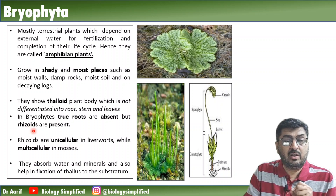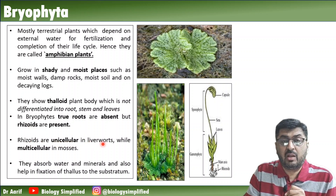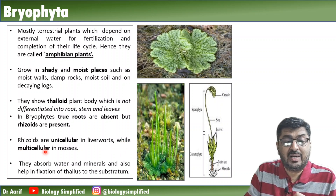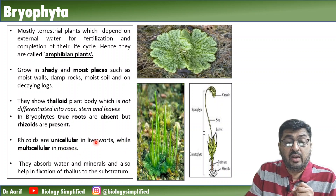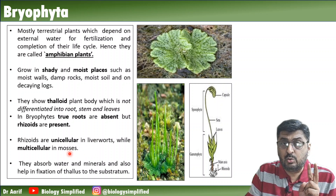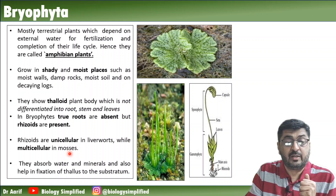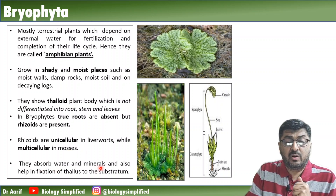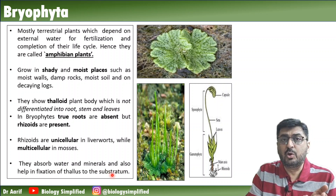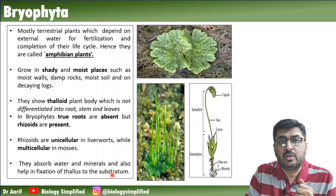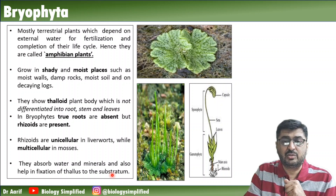Rhizoids are present. Rhizoids are unicellular in liverworts while multicellular and branched in mosses. Liverworts and mosses are two groups that we are going to study as classification of Bryophyta. The role of rhizoids is to absorb water and minerals and also help in fixation to the substratum - essentially what a root would do.